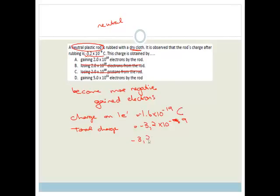So we're going to go minus 3.2 times by 10 to the minus 9 over minus 1.6 times 10 to the minus 19. And what you should easily be able to see is 1.6 into 3.2 is 2, so the correct answer is gaining 2 times by 10 to the 10 electrons by the rod. And if you're not sure, just put this in your calculator and you'll get the right answer.